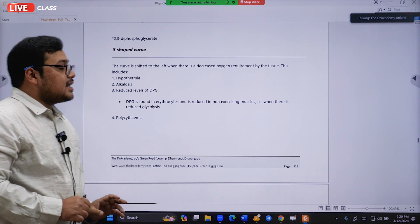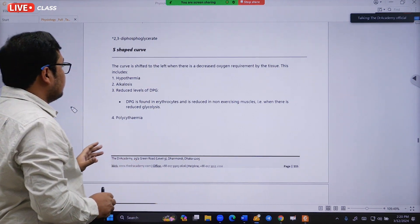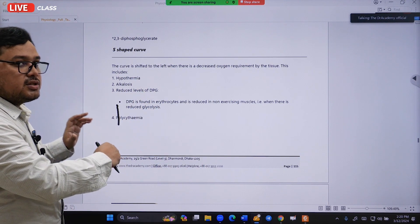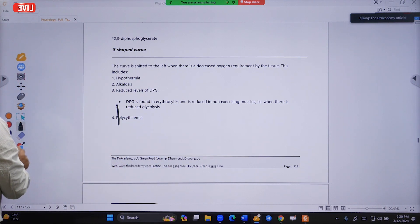Another important thing is polycythemia - this has to be remembered because it's important for shifting the dissociation curve.